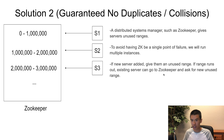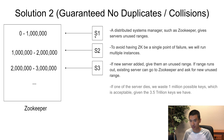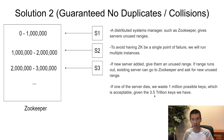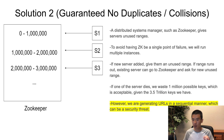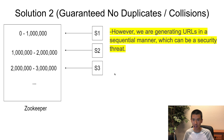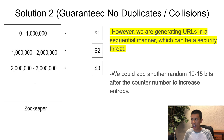When a new server is added, ZooKeeper gives it an unused range. If a server exhausts its range, it asks ZooKeeper for a new one. If a server dies, we waste at most one million keys, which is acceptable given 3.5 trillion total. However, generating URLs sequentially is a security threat — a malicious user could exploit the pattern. To fix this, we can add an extra 10 to 15 random bits after the counter number to increase entropy.